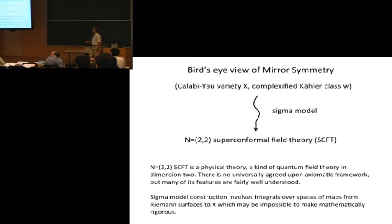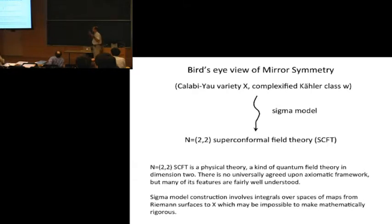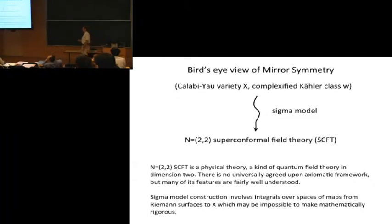Another issue is the sigma model construction itself involves Lagrangian formulations — Feynman-type path integrals over spaces of all maps from Riemann surfaces. These are hard to make rigorous, just the nature of the beast. Another annoying feature is the complexified Kähler class W — from there you're supposed to produce a Ricci-flat metric. It exists, but can you write it down? That's another iffy issue.